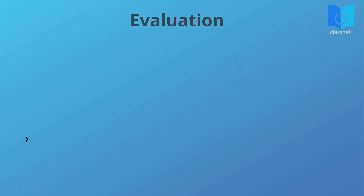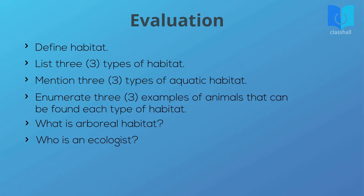If you've been paying attention, these questions should be pretty easy for you to answer. One: define habitat. Two: list three types of habitat. Three: mention three types of aquatic habitat. Four: enumerate three examples of animals that can be found in each type of habitat. Five: what is arboreal habitat? Six: who is an ecologist?